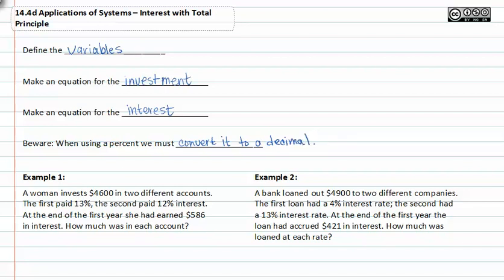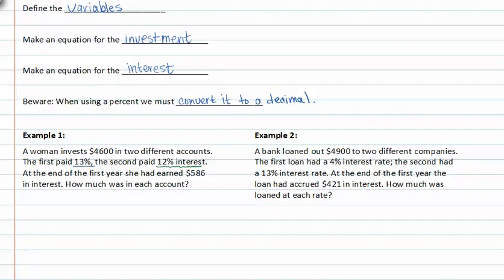In example one, a woman invests $4,600 in two different accounts. The first paid 13 percent and the second paid 12 percent interest. From here, let's write down what our variables are going to be. The amount A is going to be at an interest rate of 13 percent or .13. The second amount, amount B is at an interest rate of 12 percent or .12.